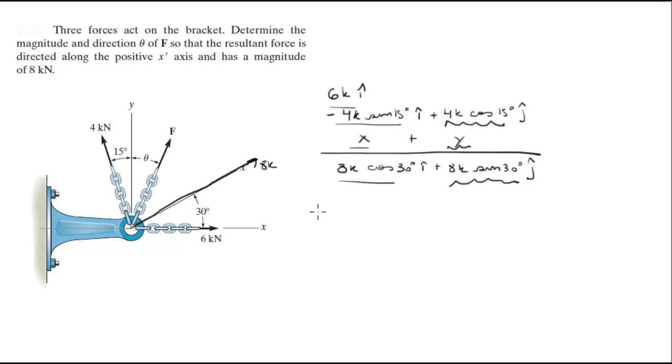So for the x we get 6k minus 1.03k plus x is equal to 6.93, which is 8k cos of 30. So when you solve for x you get that it's equal to 1.96k.